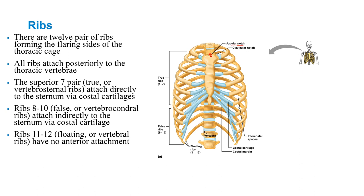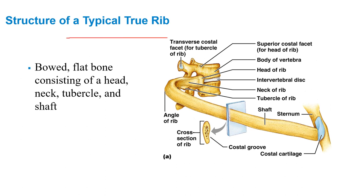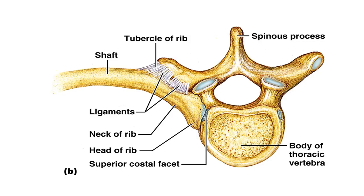There are 12 pairs of ribs forming the flaring sides of the thorax. All ribs attach posteriorly to the thoracic vertebrae and do move. The superior seven pairs are true ribs — also called vertebral-sternal — attaching directly to the sternum via costal cartilage. Ribs eight through ten are false or vertebral-chondral. Ribs eleven and twelve are floating with no anterior attachment. A true rib consists of a head, a neck, and a shaft, with intercostal grooves for blood vessels and nerves. The head articulates with the vertebral body at the costal facet, and the transverse process has a demi-facet as well.